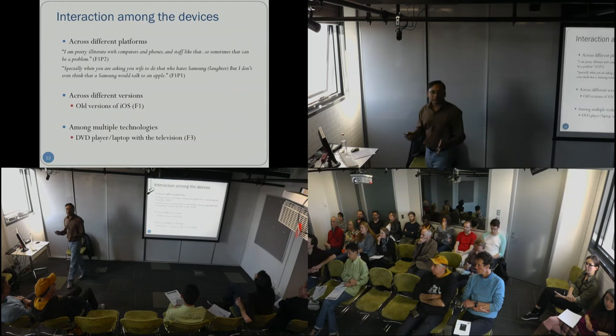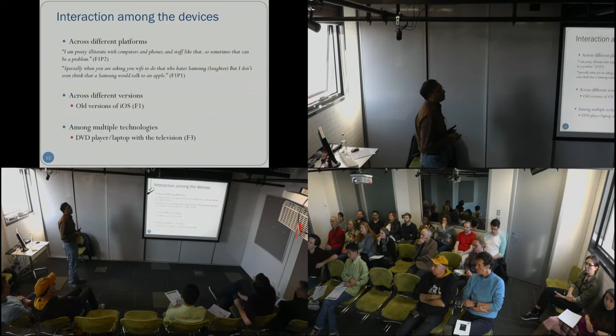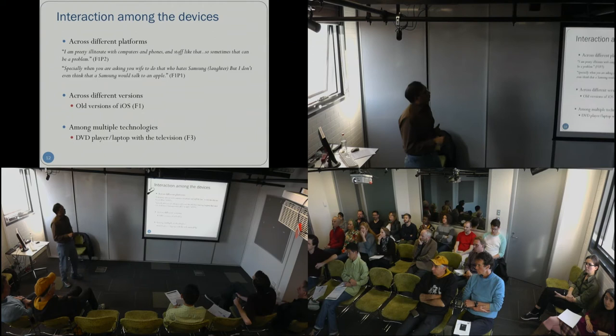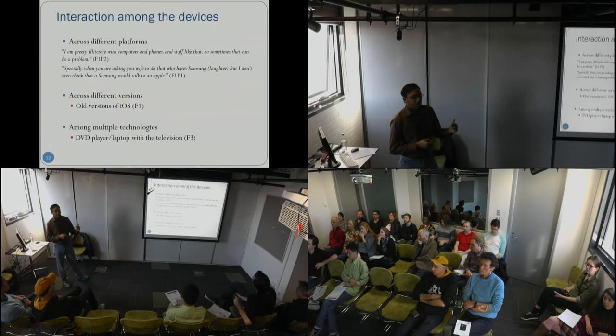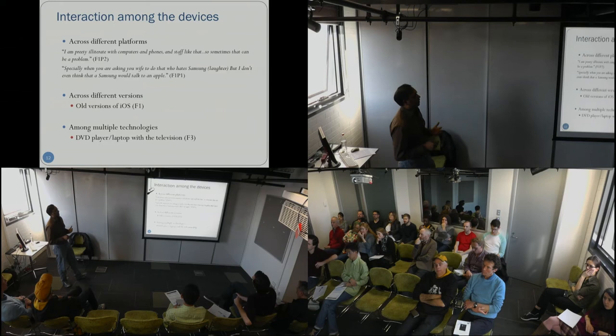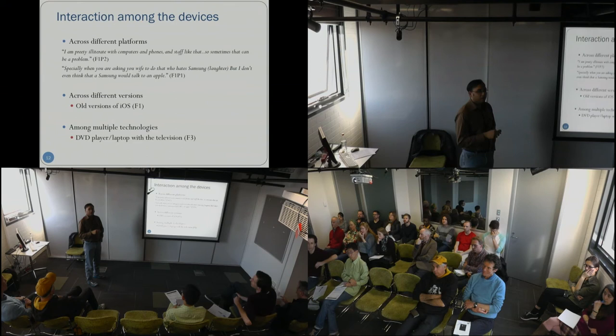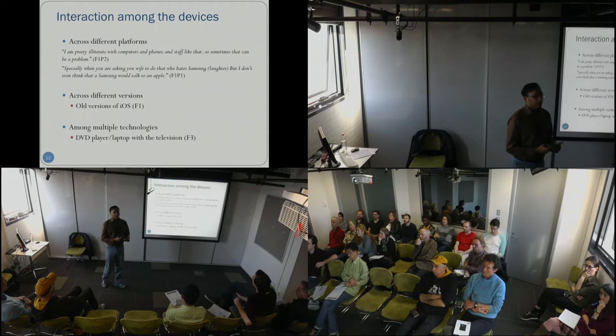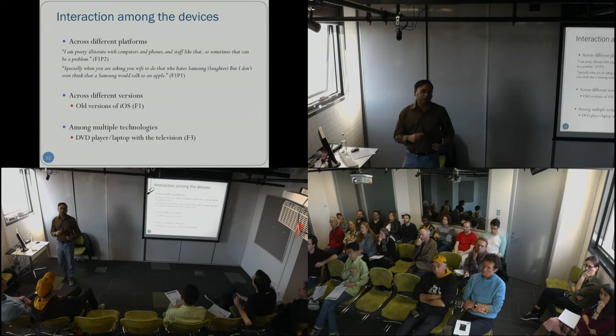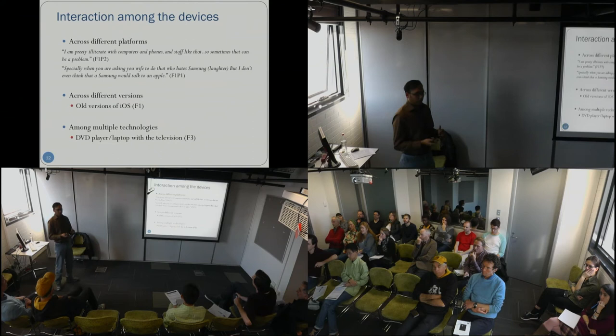As we have seen, there are many devices present or occasionally used during mealtime. What about the interaction between these devices? There are devices of the same sort across different platforms. For example, one participant said he does not use his mobile phone with the television, but his wife does use her phone with the television to play music, because he is not comfortable with technology and doesn't even know if that can be shared — his Android phone with the Apple TV.